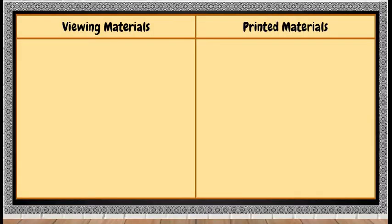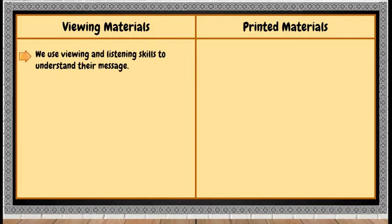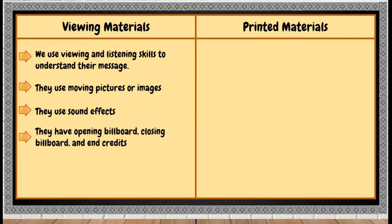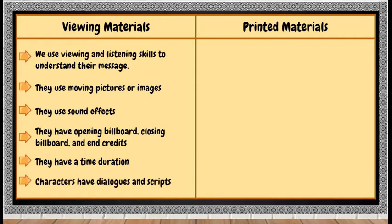In viewing materials, we use viewing and listening skills to understand their message. They use moving pictures or images. They use sound effects. They have opening billboard, closing billboard, and end credits. They have a time duration. And characters have dialogues and scripts.